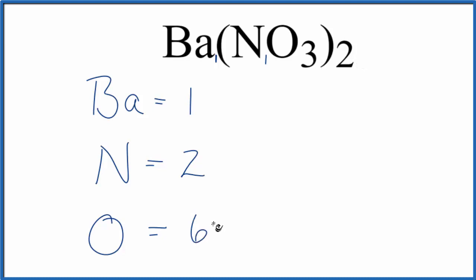And if we want to know the total number of atoms in barium nitrate, we add 6 plus 2, that's 8, plus 1 equals 9. So 9 total atoms in Ba(NO₃)₂.